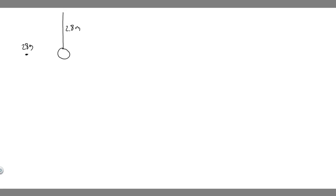Let's go ahead and draw what's going on here. So here's our pendulum — it's hanging, and we know it's going to be 2.8 meters long. We have a 28-gram rifle bullet traveling towards it at 210 meters per second. It's going to lodge into the pendulum and cause it to move in an arc at some angle, going some distance horizontally and some distance up. So we're trying to find those two distances — the x and y components.